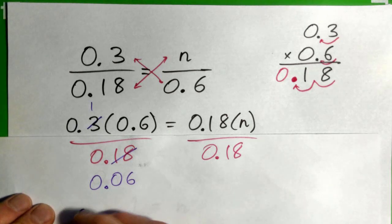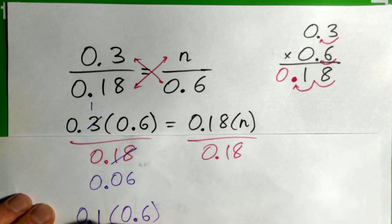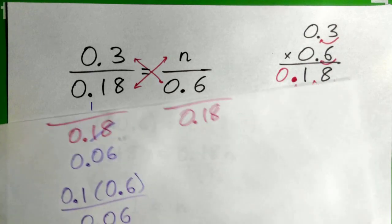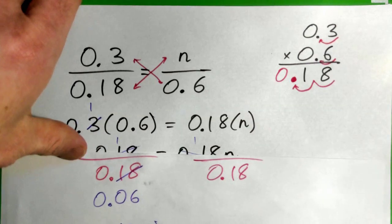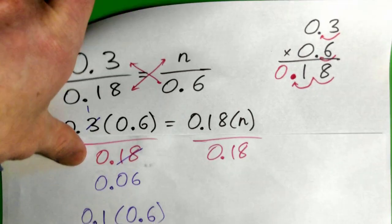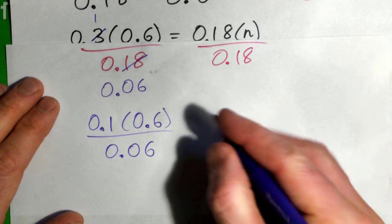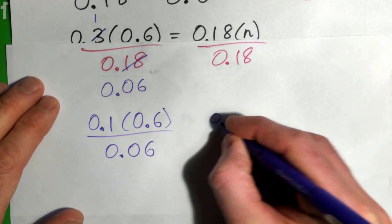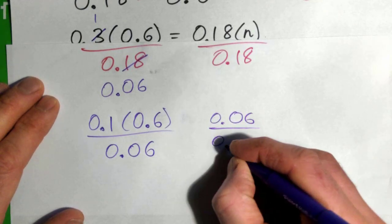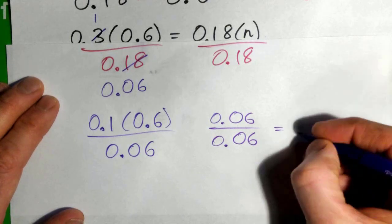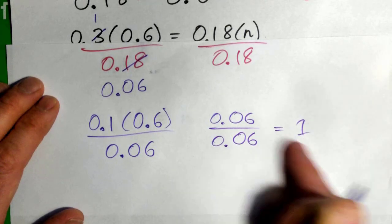So what you have is 0.1 times 0.6 all over 0.06, and that becomes... this times this becomes 0.06 over 0.06, and that is 1. So we got one this way as well.